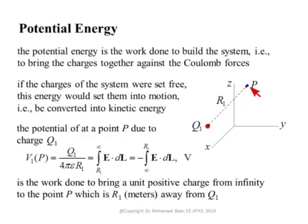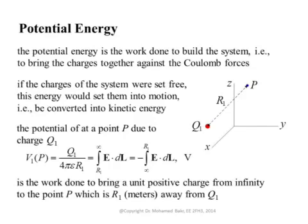Any other point in the neighborhood of q1 will have a potential due to q1 of q1 over 4πε r. The definition of this potential is the work done to take a unit charge with the electric field from point b to infinity — or equivalently, to bring a unit charge from infinity to point b against the electric field. Both definitions are equivalent. Because of charge q1, any other point around it will have a potential, meaning that if we take a unit charge and move it from that point to infinity, work will be done by the electric field.